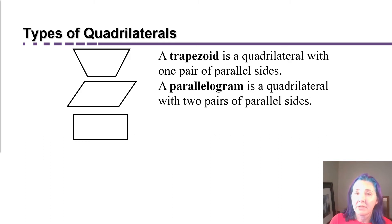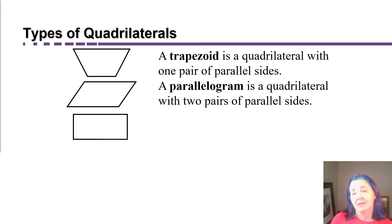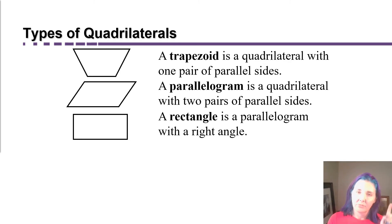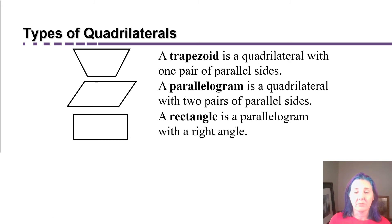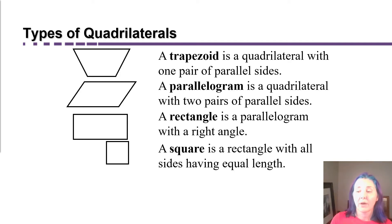If you say not only do the pairs of sides have to be parallel, but in fact they have to meet at right angles, then you have what we all recognize as a rectangle. The definition of a rectangle is a parallelogram that has a right angle. We only have to specify one right angle, but if it has one, then all of them will be right angles. If we further specify that all of the sides have to be equal, then we have a regular quadrilateral, which we all know is called a square.